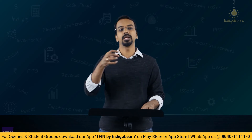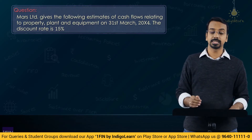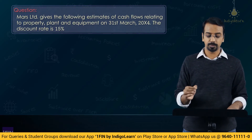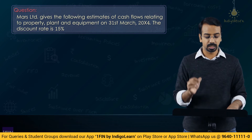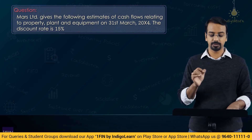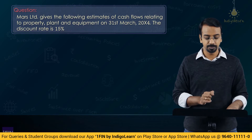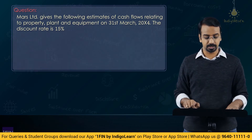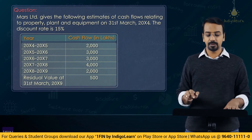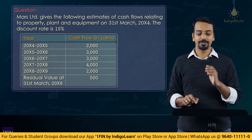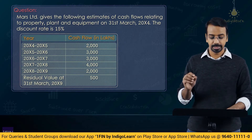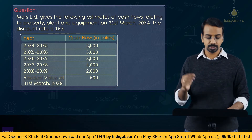Let us look at a small example to understand how to calculate value in use and then the impairment loss. Mass Limited gives the following estimates of cash flows relating to property, plant and equipment as on 31st March Year 4. The discount rate given is 15%. Cash flows are provided for the years ending 31st March Year 5 through Year 9, along with a residual value at the end of 31st March Year 9 of 500 lakhs.